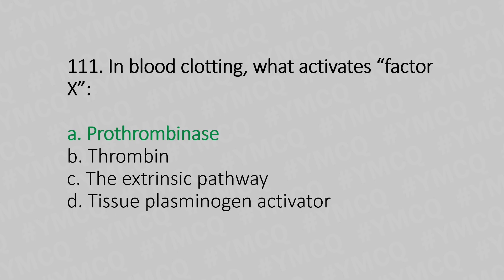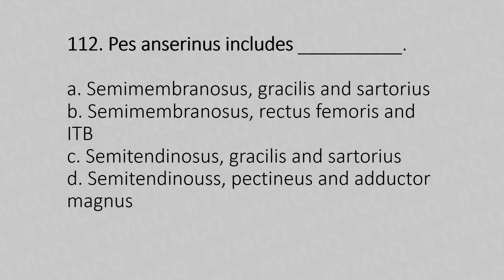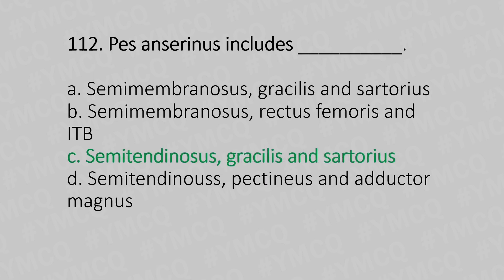Question number 112: Pes anserinus best answers include dash. Option A: semimembranosus, gracilis, and sartorius, Option B: semimembranosus, rectus femoris, and ITB, Option C: semitendinosus, gracilis, and sartorius, Option D: semitendinosus, pectineus, and adductor magnus. The answer is Option C, semitendinosus, gracilis, and sartorius.